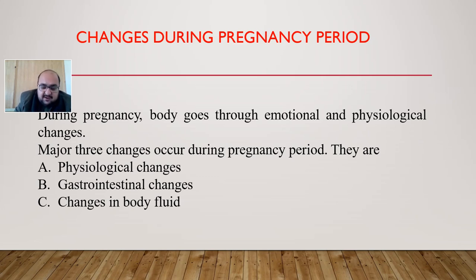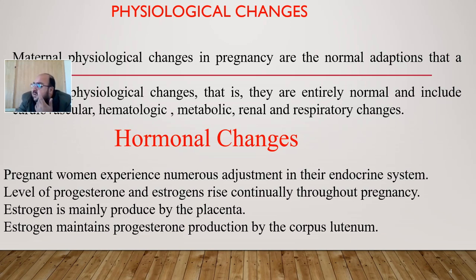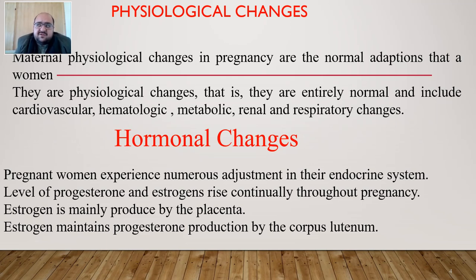Let's start with physiological changes. Physiological changes refer to changes in the entire physiology of the body — for example, changes in the liver, stomach, pancreas, and kidney. Different organ systems function differently, including the cardiovascular system and blood circulatory system. The heart also undergoes changes. Physiological changes mean that the function and activity of different organs change during pregnancy.